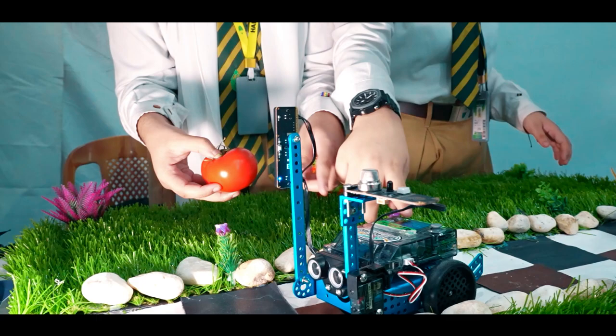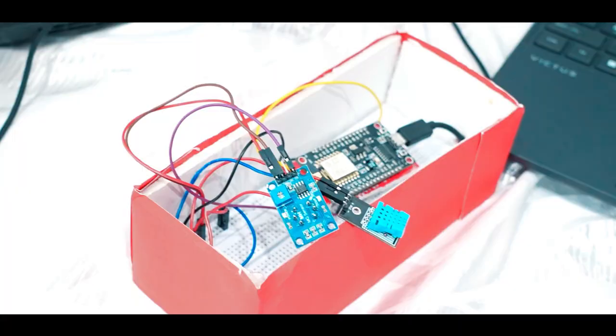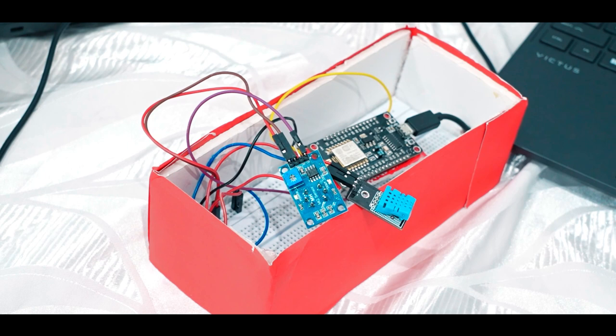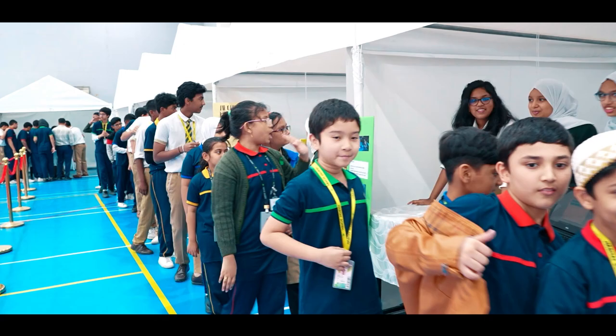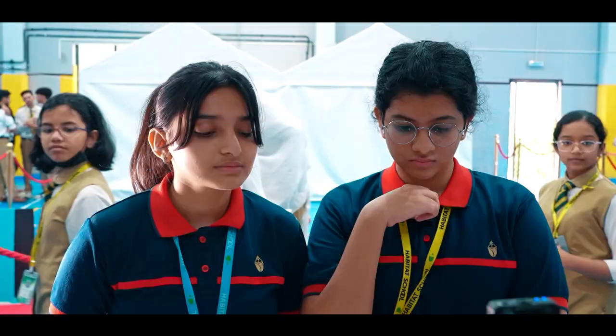This is a pollution monitor and it works over an ESP8266 wifi module. So basically there are two sensors, a DHT11 temperature and humidity sensor and also an MQ7 carbon monoxide sensor.